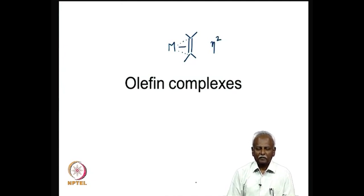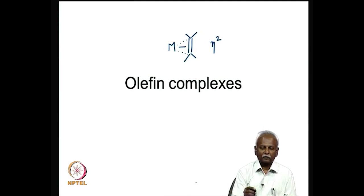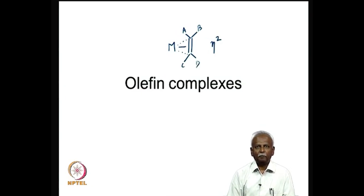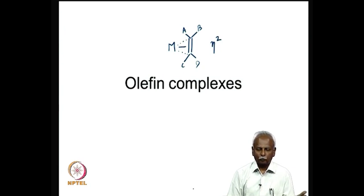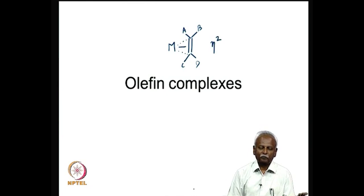In these systems, the olefin is usually planar. If you consider the 4 atoms bonded to the olefin, labeled A, B, C and D, and the 2 carbons are all in a plane, then the metal is in a position below that plane. The metal itself is in a plane below the plane containing the 4 atoms A, B, C, D and the 2 carbons which are interacting with the metal.